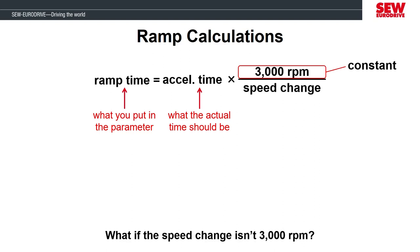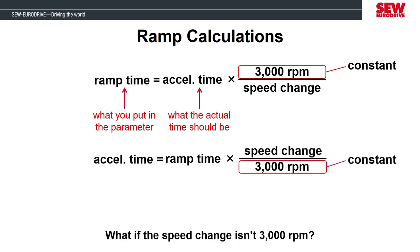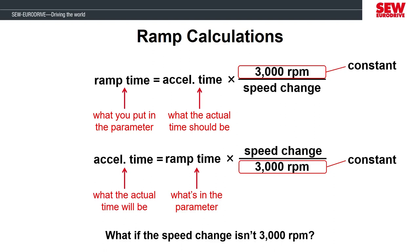What can we do if we already have a ramp time parameter entered and want to determine what the actual acceleration time will be? We can use algebra to rearrange the equation to get the acceleration time on the other side of the equal sign. When the equation is rearranged, the value that is in the MobiDrive ramp parameter will now go on one side, and if we plug in the difference in the speed change, we can determine the actual time to perform the acceleration of that speed change.